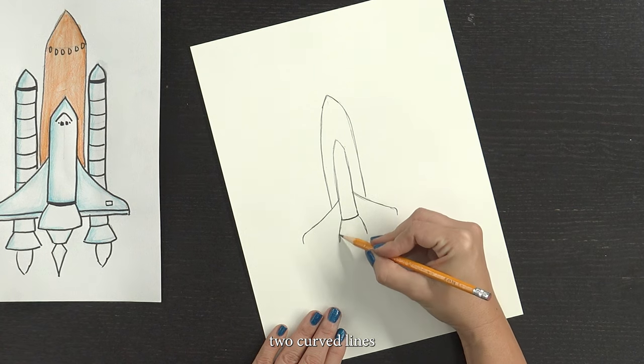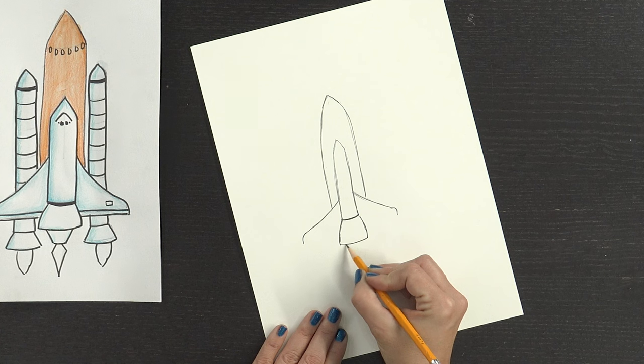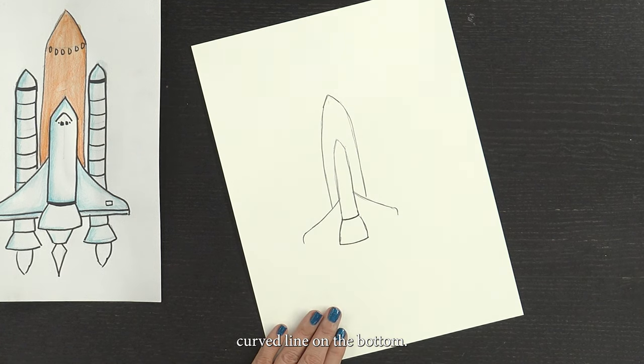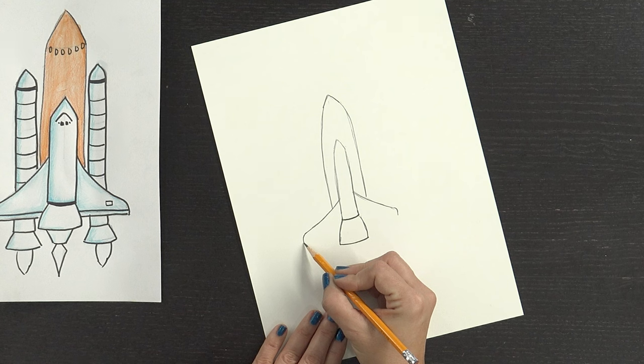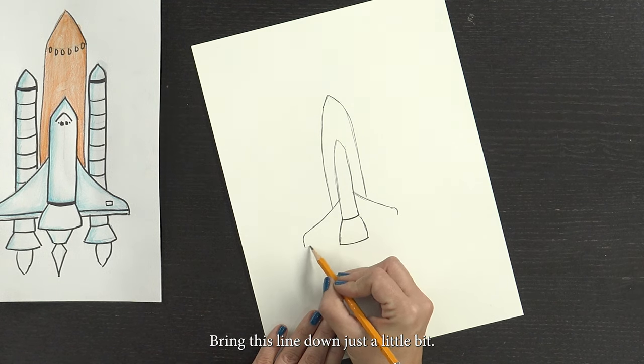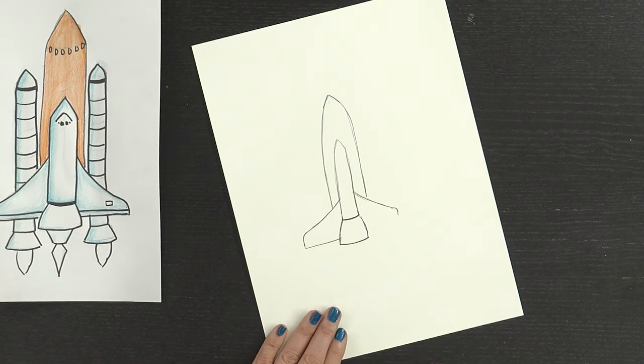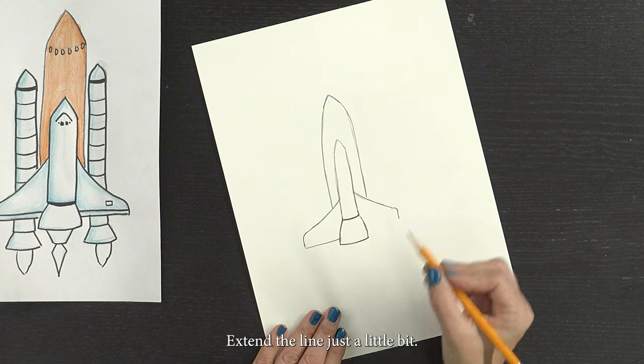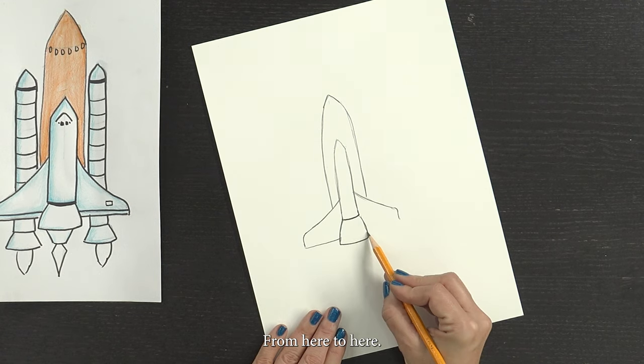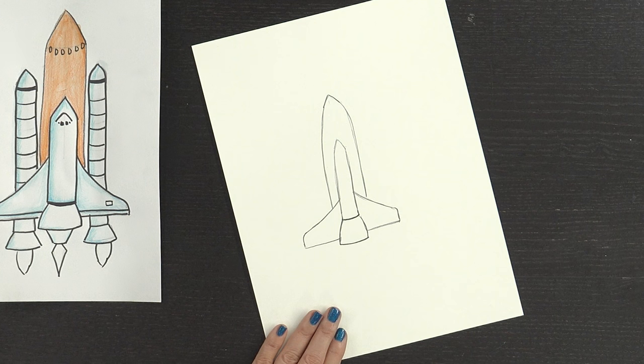Two curved lines. Curved line on the bottom. Bring this line down just a little bit and from here to the side. Same thing on the other side. Extend that line just a little bit from here to here. Great job.